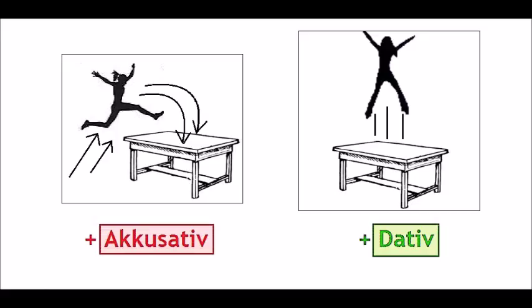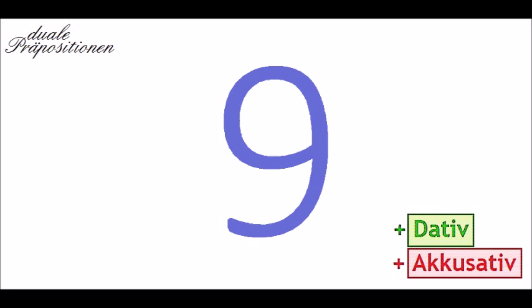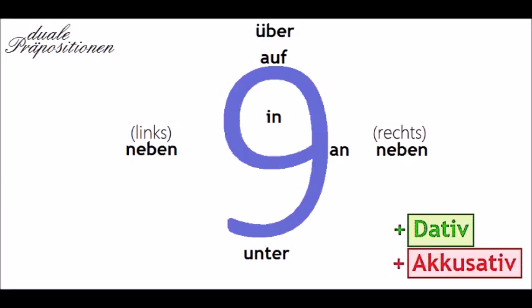There are nine prepositions of location that can have this distinction — they are called dual prepositions. An easy way to remember them is to write them around the number nine. They are: auf (on), unter (under), über (over), in (in), an (at or next to — usually combined with links and rechts, left and right), neben (next to), zwischen (between), hinter (behind), vor (in front of / before).